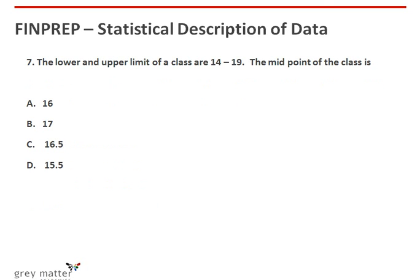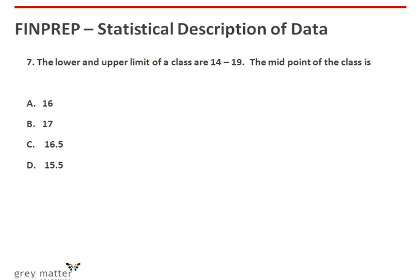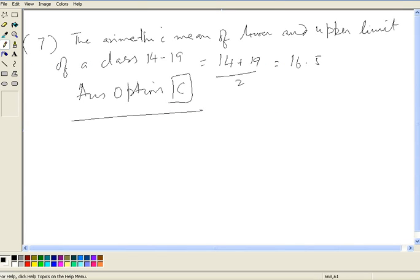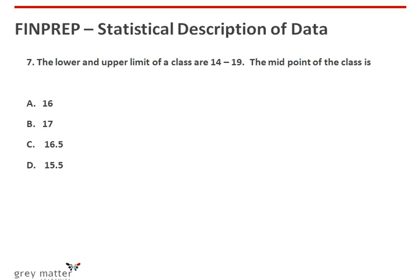Seventh question: the lower and upper limit of a class are 14 to 19. The midpoint of the class would be the arithmetic mean of the lower and upper limit: 14 plus 19 divided by 2, equal to 16.5. So the answer is option C, which is 16.5.